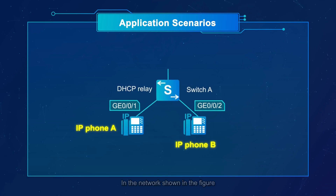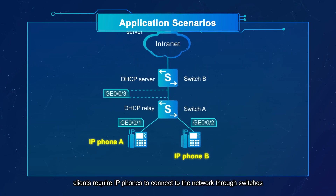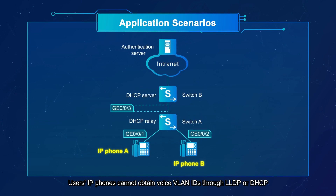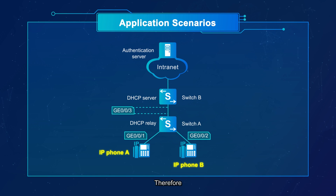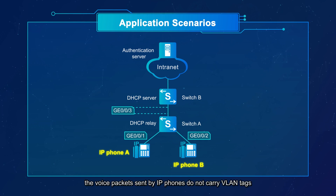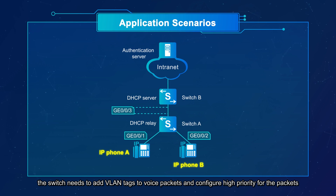In the network shown in the figure, clients require IP phones to connect to the network through switches. Users' IP phones cannot obtain voice VLAN IDs through LLDP or DHCP. Therefore, the voice packets sent by IP phones do not carry VLAN tags. To ensure voice quality, after voice packets are sent to the switch, the switch needs to add VLAN tags to voice packets and configure high priority for the packets.